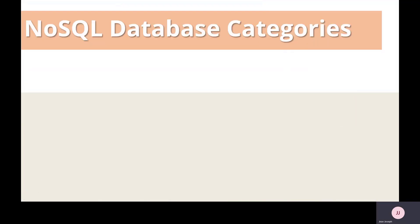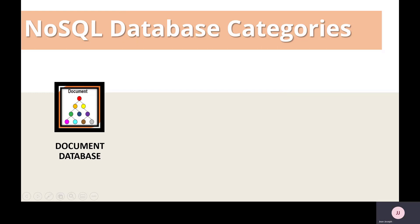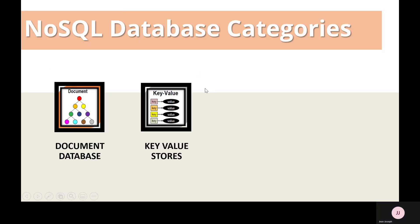What are the categories of NoSQL databases? There are four common ones. The first is a document database — it pairs each key with a complex data structure known as a document. It can contain many different key-value pairs, key-array pairs, or even nested documents. Examples include MongoDB, CouchDB, and Azure Cosmos DB with MongoDB API. We also have key-value stores, which are the simplest NoSQL databases.